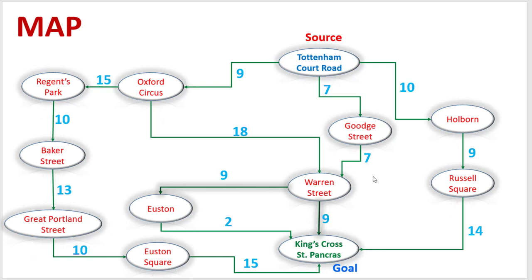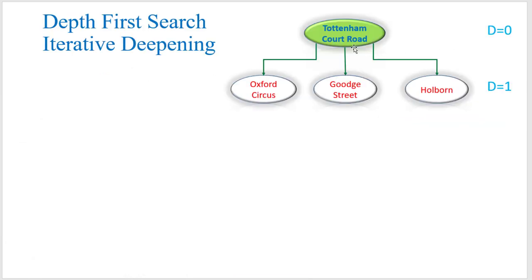So let's find out how we can do that. We have to start from our source and find out the next reachable nodes. From this source node, these three nodes are reachable. We create a tree like that — our source is at depth zero, and these three nodes are at depth one.